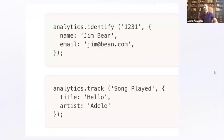Then they stumbled onto an idea: what if they implement their analytics with a single simple API? That API would be as simple as possible — just two questions: who is the user, and what are they doing? These two API calls serve as the basis of Segment's tracking API even today. If you instrument your tools with this API, you can add any analytics and marketing provider without writing any additional code.